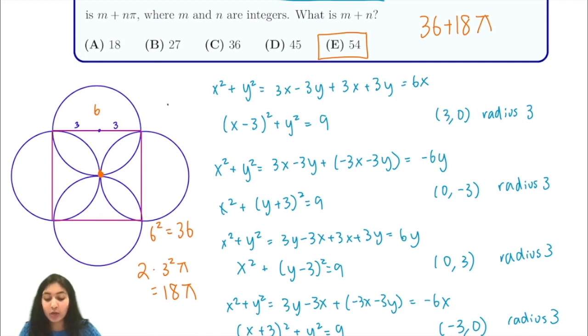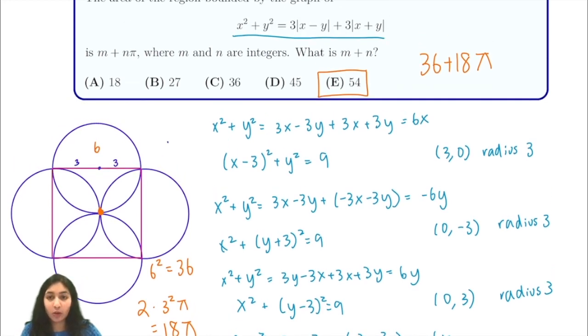In this problem, all we did was expand out for all possible combinations of our absolute values. When you have absolute values, that's a pretty common thing to do, especially when we're trying to look for an area. We just plotted all of those graphs and found that our answer was 36 + 18π. Thank you for watching. If you liked the video, please make sure to like and subscribe.